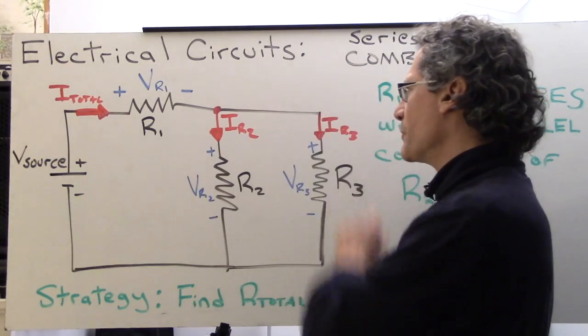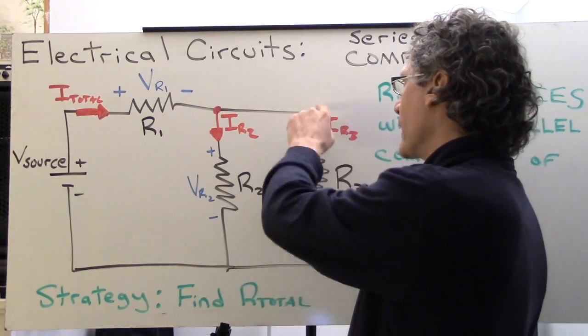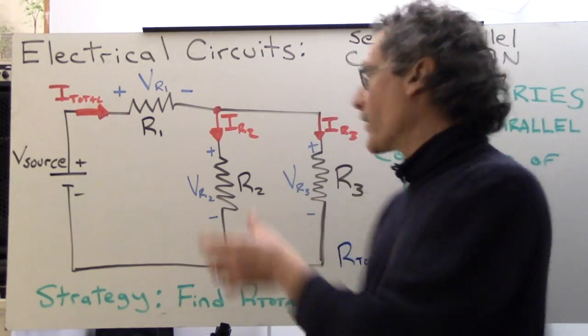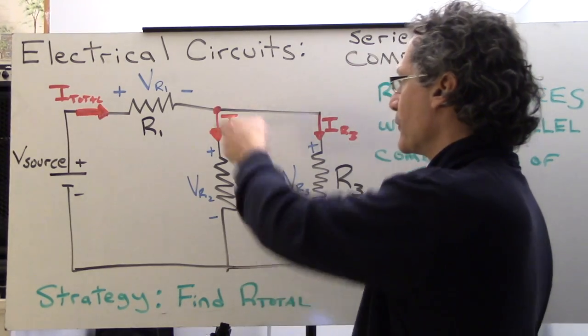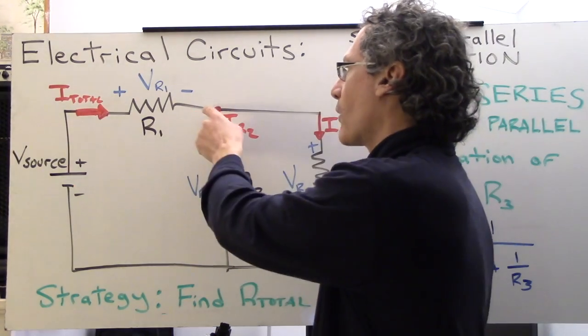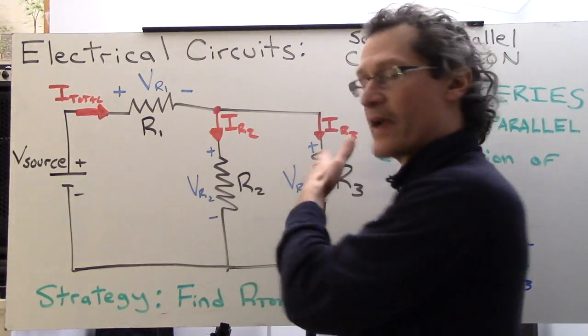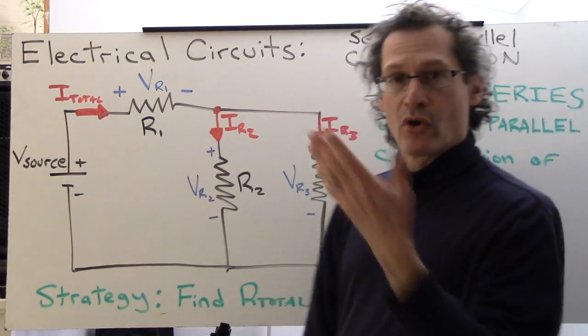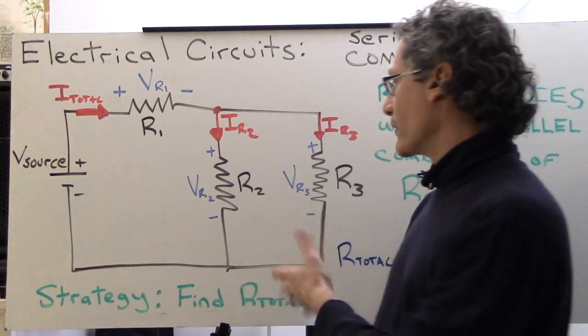They have each of their top and bottom leads are in direct contact with each other through these conductors over here. So R1, only one side of R1 is in direct contact with this piece, so it is in series. R1 is in series with R2 and R3.